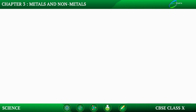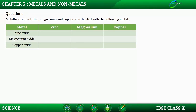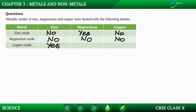Let us solve a few questions. The first question: metal oxides of zinc, magnesium, and copper were heated with the following metals — in which cases will displacement reactions take place? Zinc and zinc oxide: no displacement. Zinc and magnesium oxide: displacement. Zinc and copper: no displacement. Magnesium and zinc: no displacement. Magnesium oxide and magnesium: no displacement. Magnesium oxide and copper: no displacement. Copper oxide and zinc: displacement. Copper oxide and magnesium: displacement. Copper oxide and copper: no displacement.